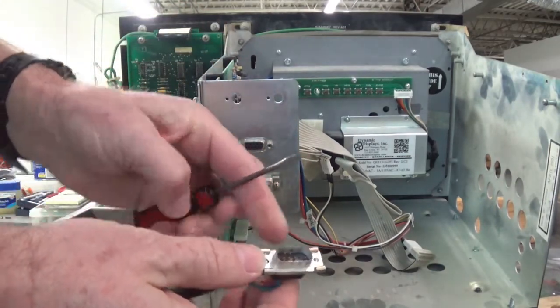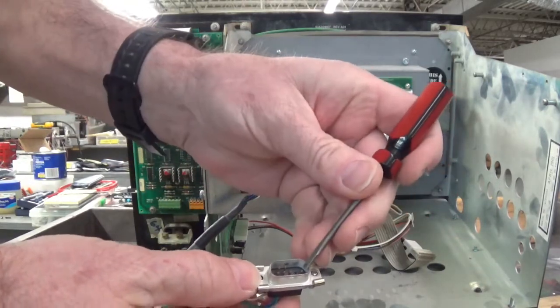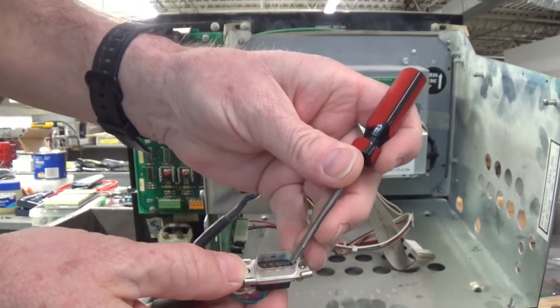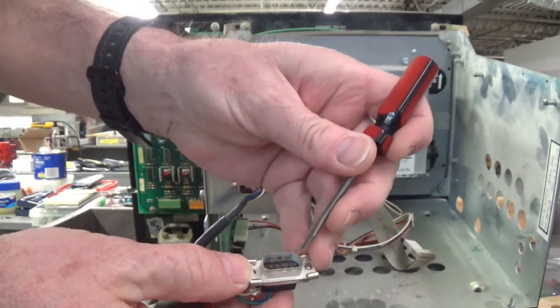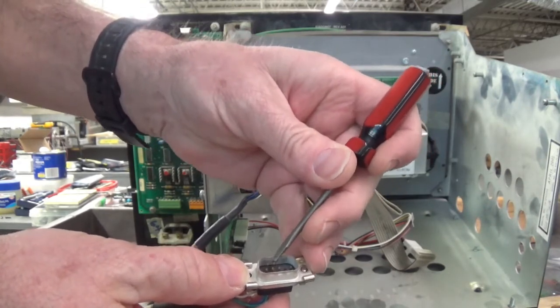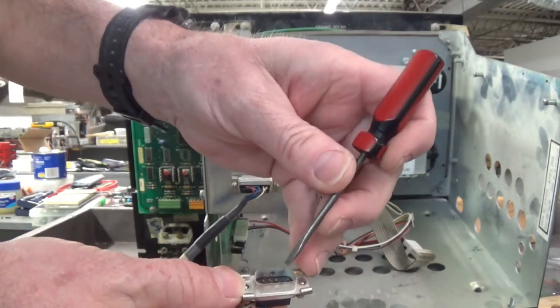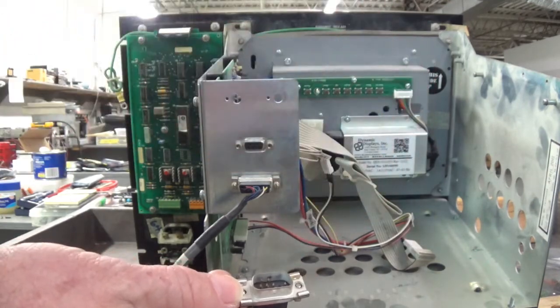Alright, it's got pins. Here's pin 1, this is a 9-pin DB9 connector. Here's pin 1, 2, 3, 4, 5, 6, 7, 8, 9. Looks like pin 2 has no pin, 6 and 7 have no pin.